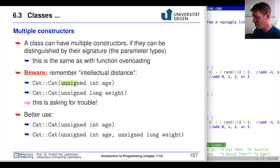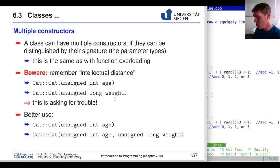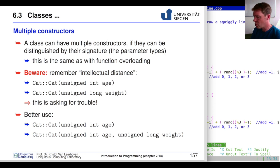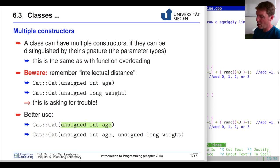However, having two constructors each with just one integer parameter is asking for trouble, because it will be hard for any user to figure out whether a single number they supply is for age or for weight. That can lead to lots of problems later on. It's better to use a clearly distinctive difference in parameter types or counts — for instance, one parameter supplies the age, and two parameters supply both age and weight.